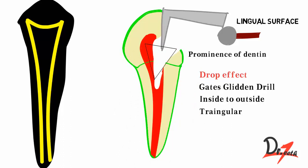The access cavity opening for the maxillary lateral incisor is similar to the central incisor, except it is smaller and usually more ovoid. For the lateral incisor, a number 2 round bur is used instead of number 4. I hope this video was helpful. If you liked it, please share, comment, and subscribe.